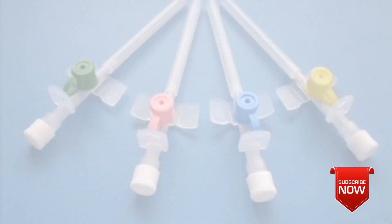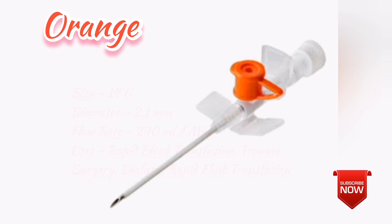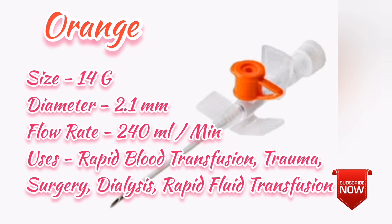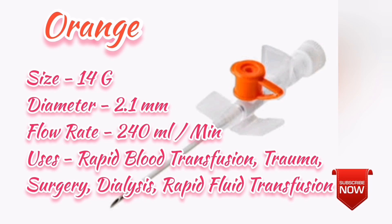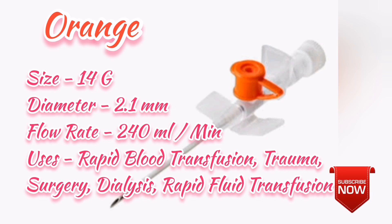The first color is orange. If you look at the picture, it is an orange color cannula. The size of the orange color is 14G. The diameter is 2.1 mm. The flow rate is 240 ml per minute. If you are using this, you can use it for rapid blood transfusion, surgery, and trauma patients. It can also be used for rapid IV fluids, mostly in adult patients, and during dialysis.